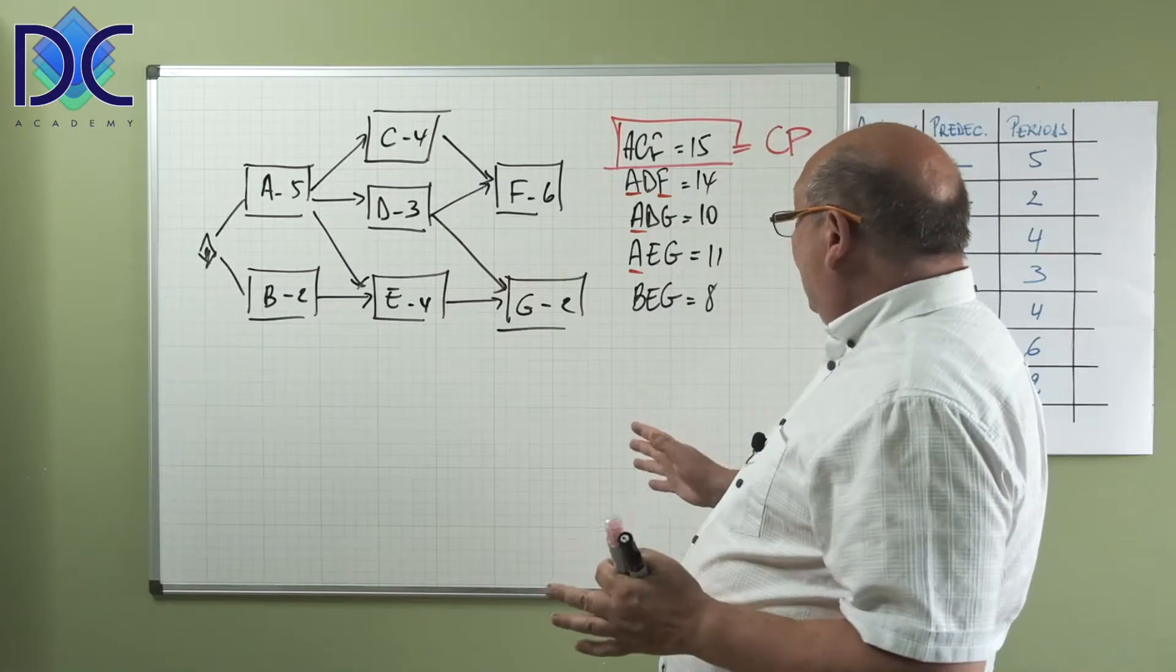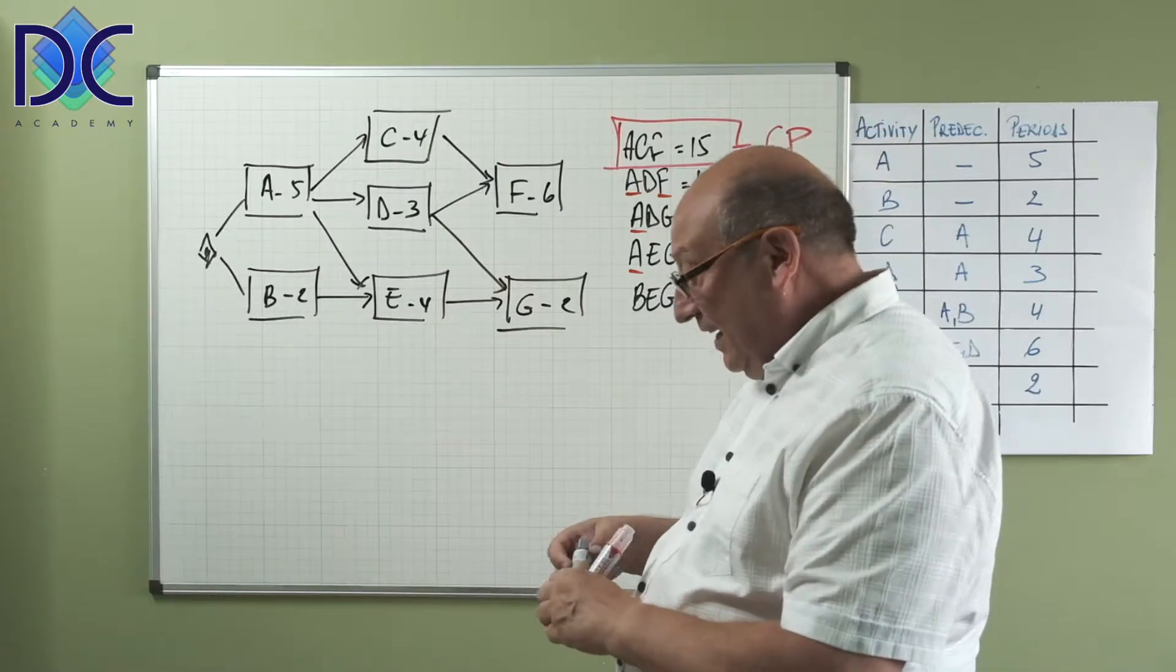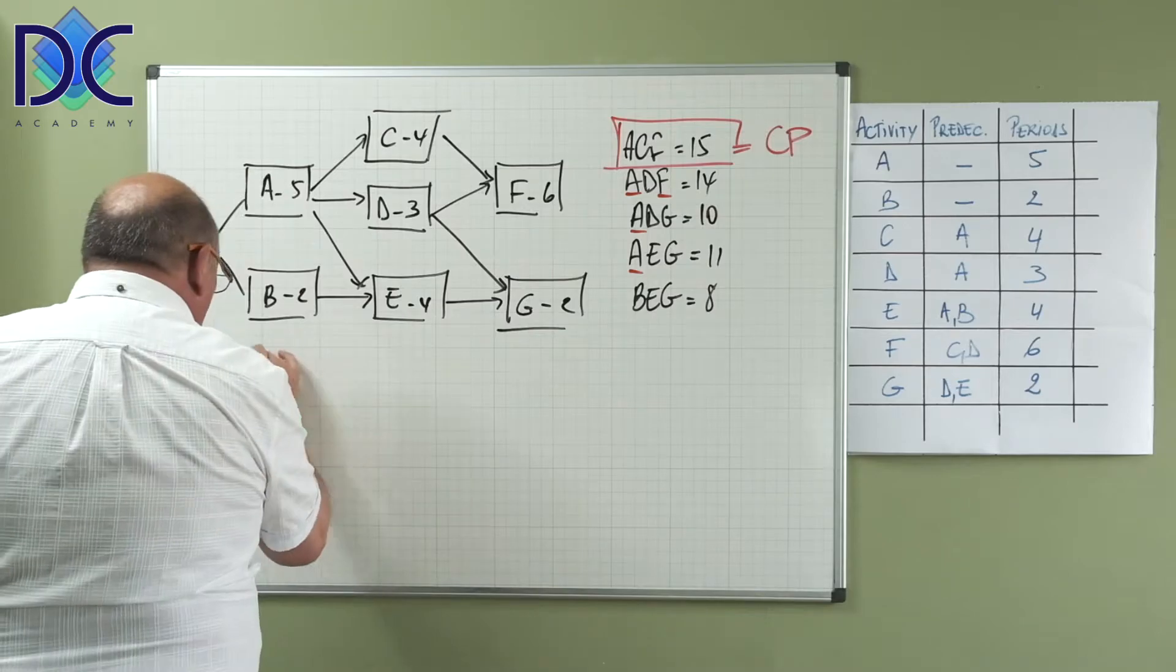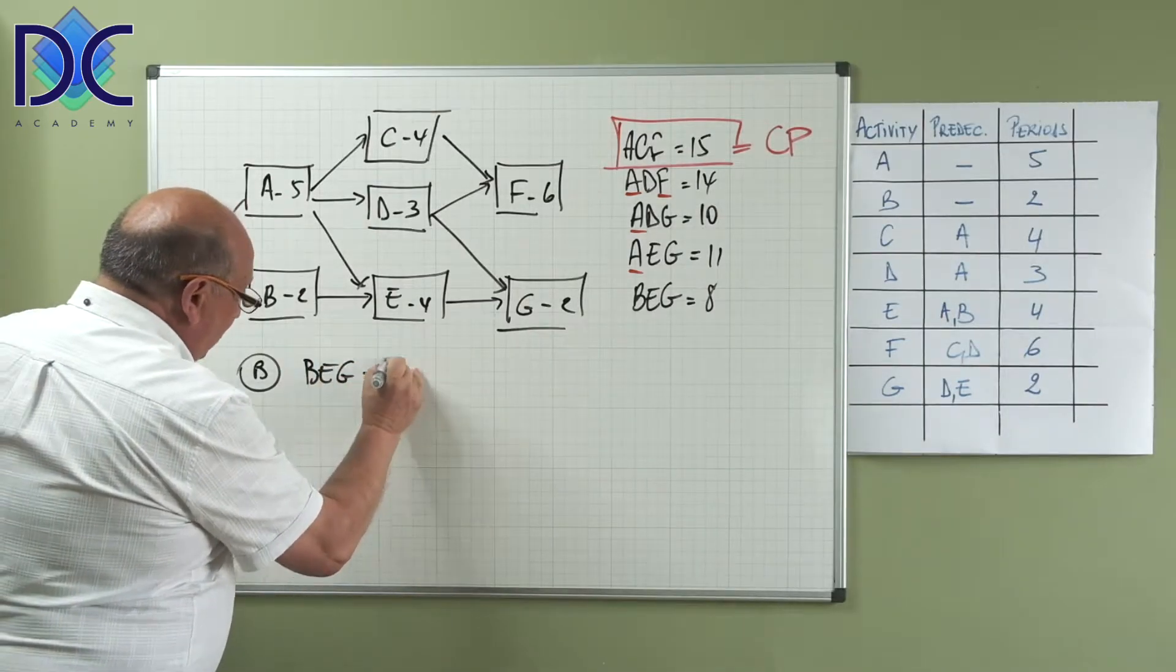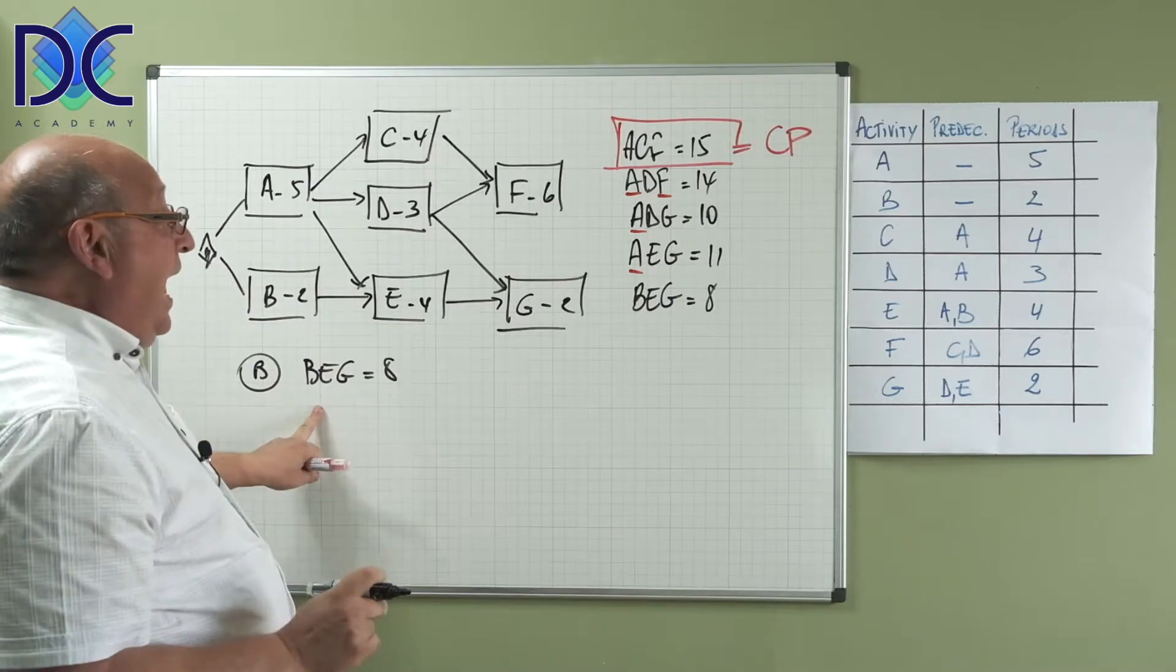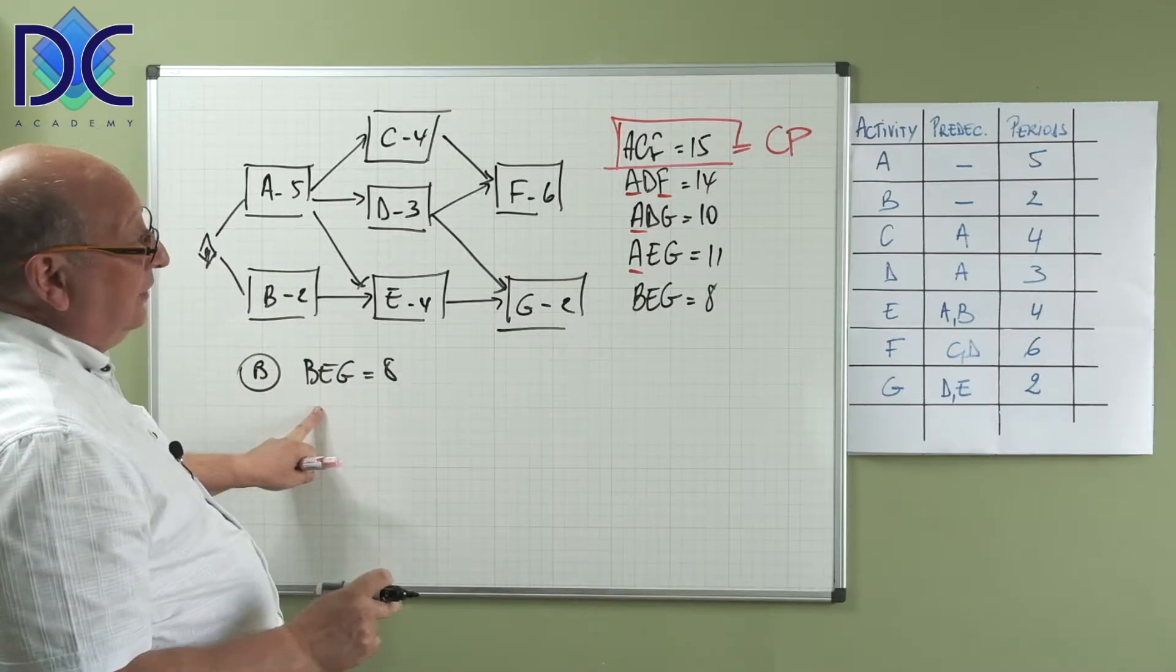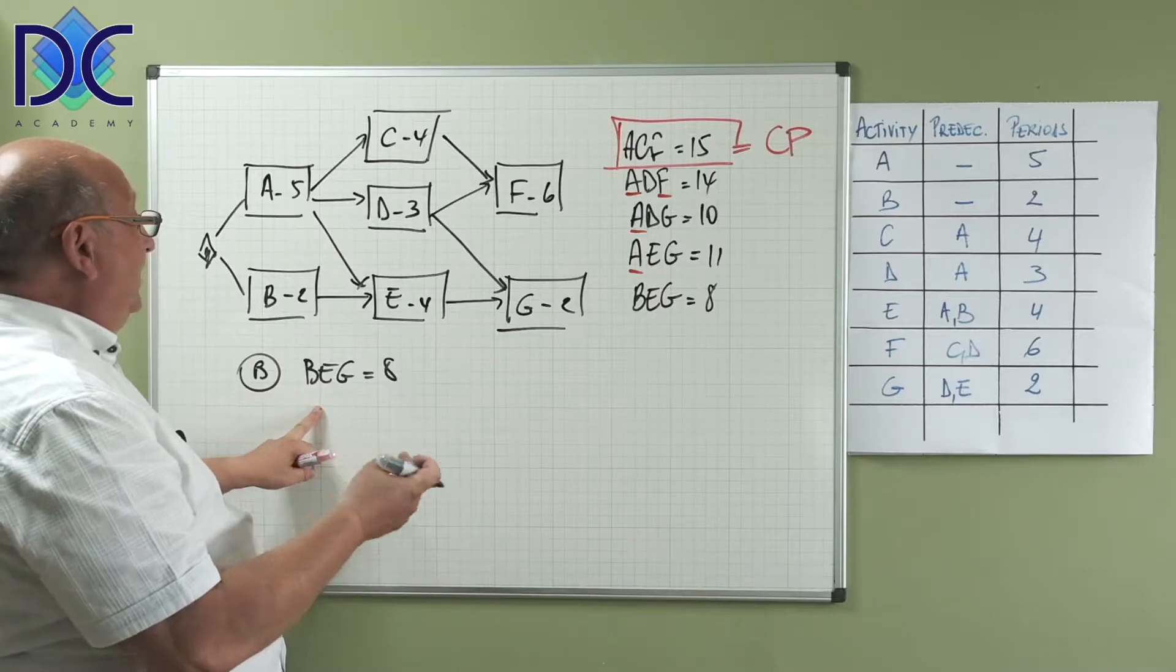Now let's look at activity B. For B, we have B is on the path BEG with the duration of 8, and we have to compare this with the critical path.